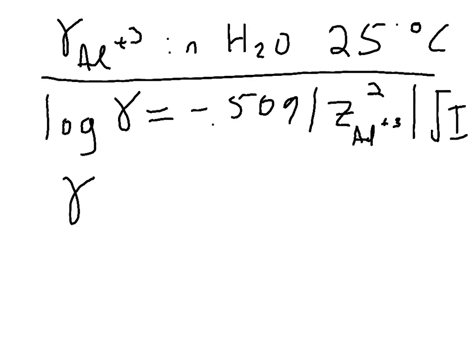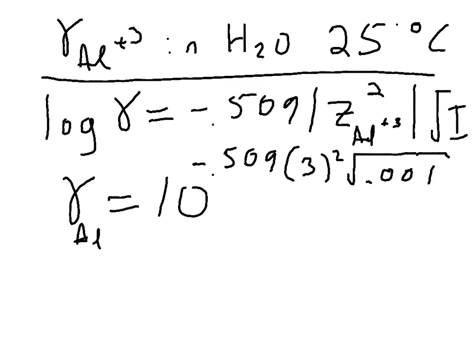So we can see that gamma is just equal to 10 to the negative 0.509, the charge on the aluminum is going to be 3, so we've got a 3 squared, and then we've got the square root of 0.001 for the ionic strength.